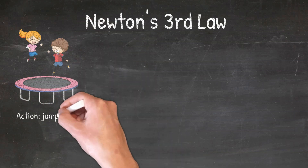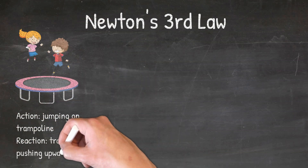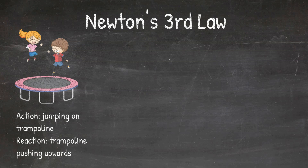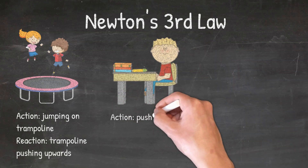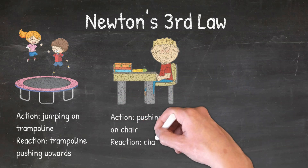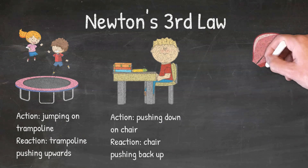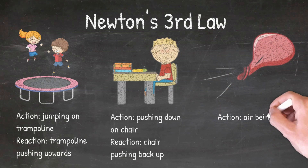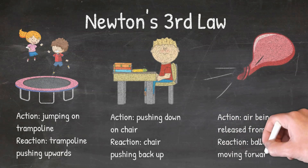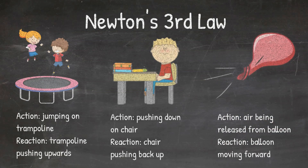The trampoline then applies a force upwards — this is the reaction, and it is also why you get propelled up in the air. When you are sitting in a chair, you are applying a force down onto the chair, which is the action, but the chair applies the same force back up to you, which is the reaction — that is why you don't fall through the chair. And when you let a balloon go with air in it, the air coming out of the back of the balloon is the action, which causes the balloon to move forward, which is the reaction.